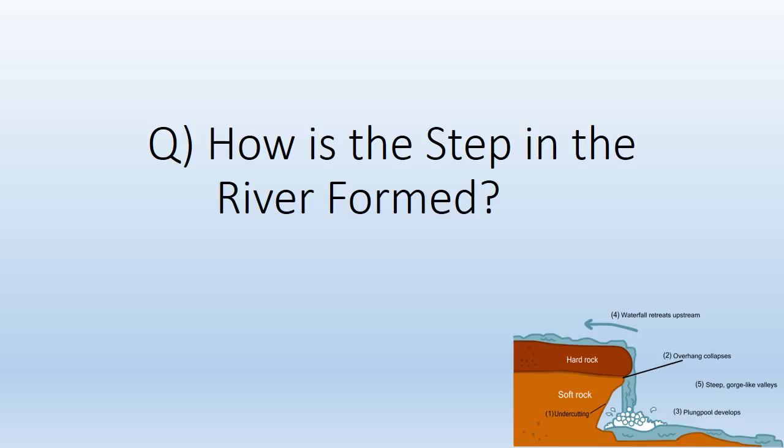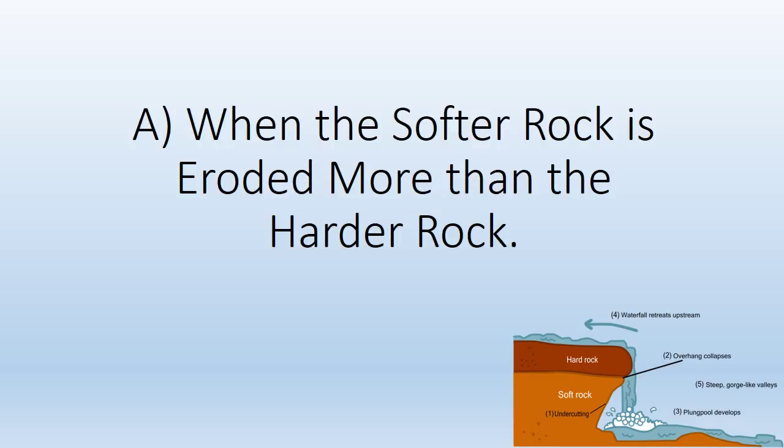How is the step in the river formed? When the softer rock is eroded more than the harder rock.